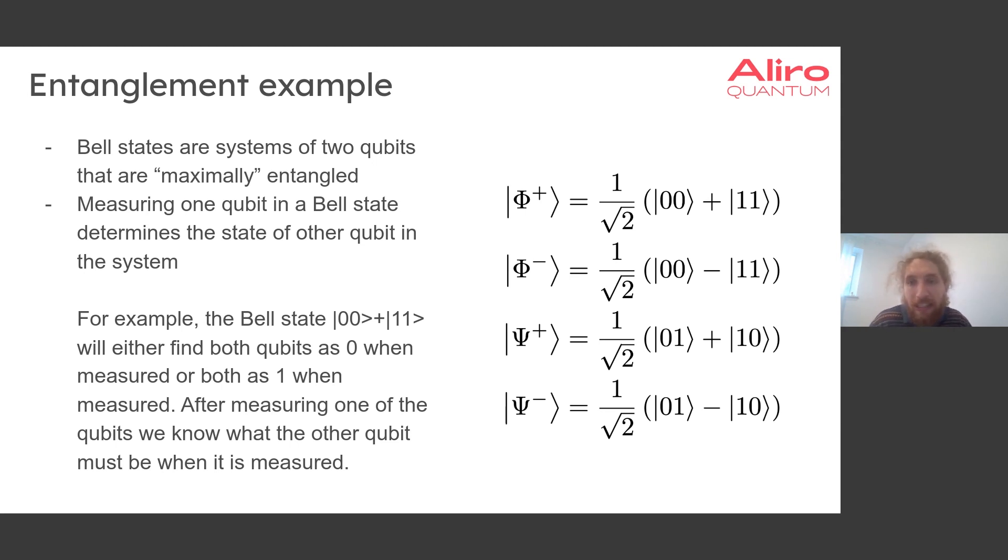For example, we will consider either Bell state where the qubits are in a superposition of both being 0 and both being 1. And these are the top two Bell states shown on this slide.